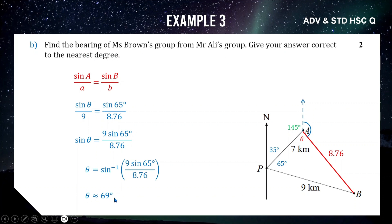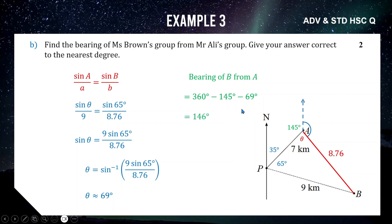To find the final bearing of B from A, we take the full circle of 360 degrees, subtract the 145-degree exterior angle and subtract the 69-degree theta: 360 − 145 − 69 = 146 degrees. So the bearing of Ms Brown's group from Mr Ali's group is 146 degrees to the nearest degree — that's the Band 5 answer for this Advanced and Standard HSC bearings question.